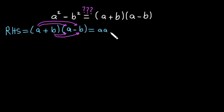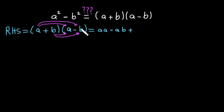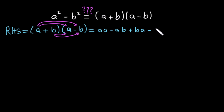Then b multiplied by a gives plus ba, because both are positive. And b multiplied by minus b gives minus b squared, because here we have plus times minus which gives minus, so minus b times b.